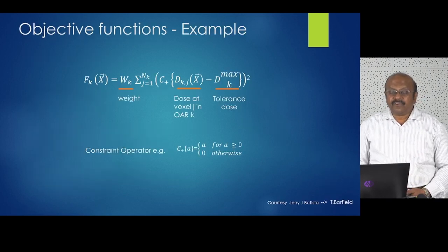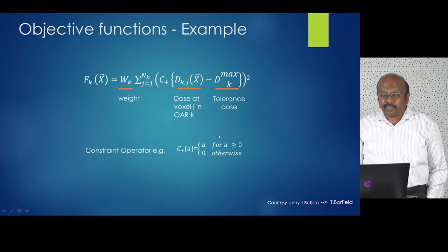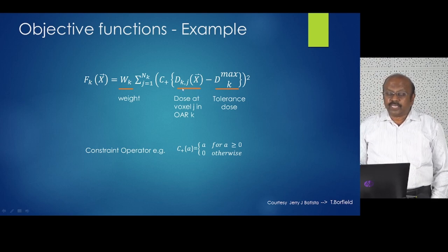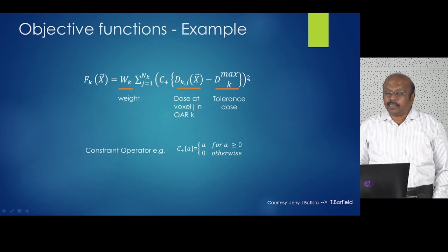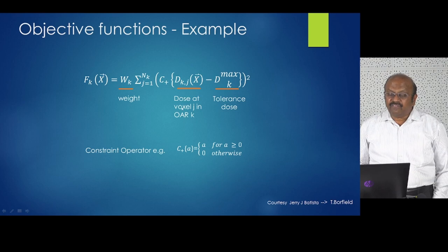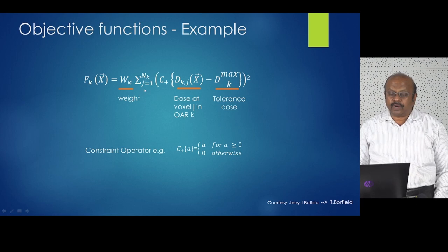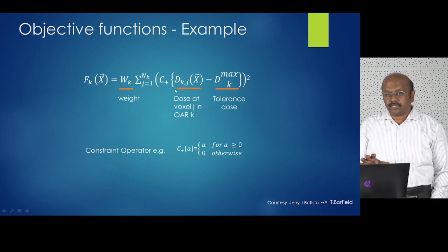The objective function equation uses the dose at a voxel in the OAR and the tolerance dose. The calculation goes voxel by voxel: you take the square of the difference between the OAR voxel dose and tolerance dose, apply a constraint operator and a weighting factor, and sum over all OARs from J=1 to K and at every voxel. This is the equation used for optimization.